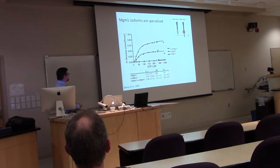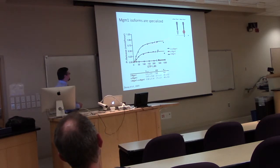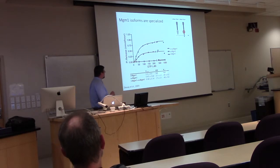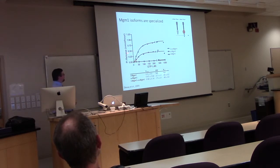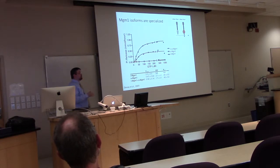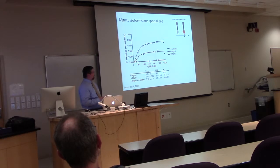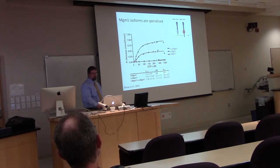In the presence of long MGM1, you actually get a stimulation of short's GTPase activity. While long doesn't hydrolyze or even seem to bind GTP, it can stimulate the activity of short. We think that cardiolipin and the long isoform — integral to the inner membrane — serve as a proofreading mechanism for short isoform activity, which is performing fusion.